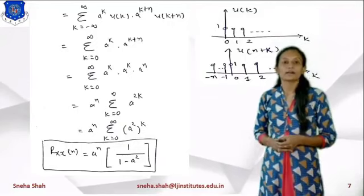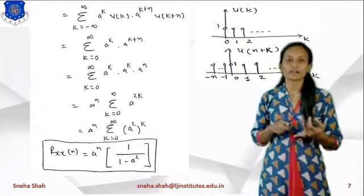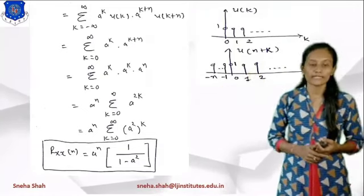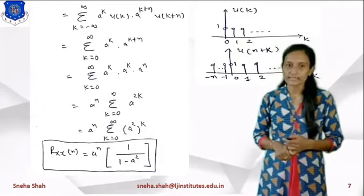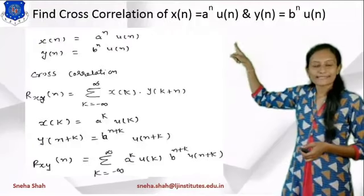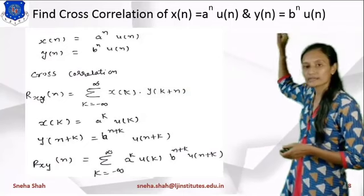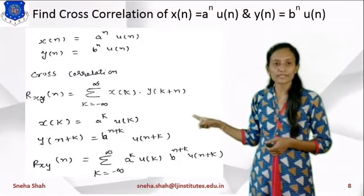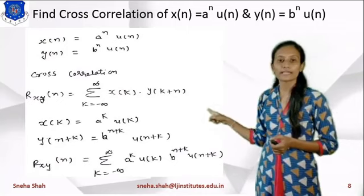So this way we can find out the auto-correlation function using the equation method. In any example where u(n) is given, for convolution or correlation, we have to use this equation or graphical method only — we can't use the tabulation or multiplication method. Basically, for comparing any two signals we can use convolution or correlation to find the similarities between them. The next example is: find cross-correlation of x(n) = a^n · u(n) and y(n) = b^n · u(n). We will use the equation of cross-correlation: Rxy(n) = summation k = -∞ to ∞ of x(k) · y(k+n).